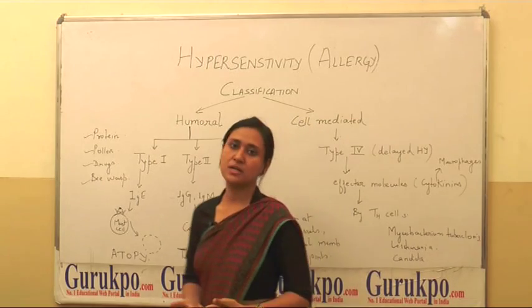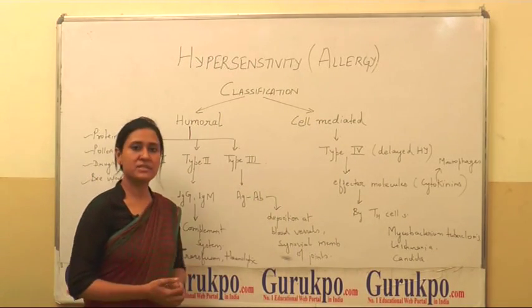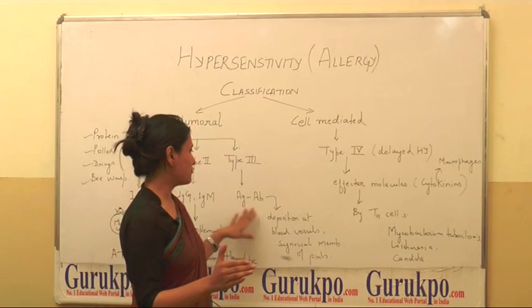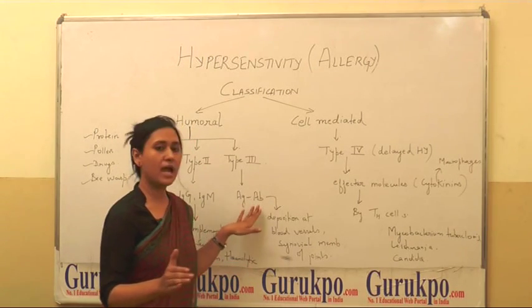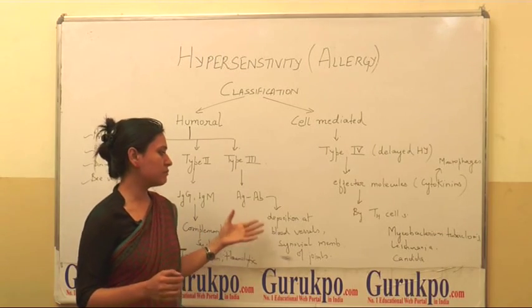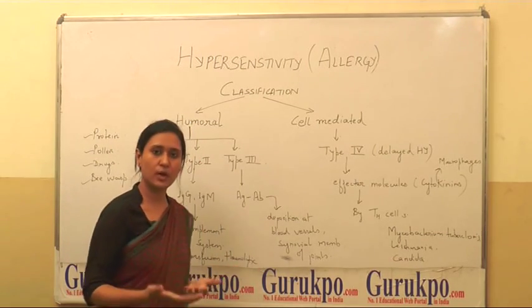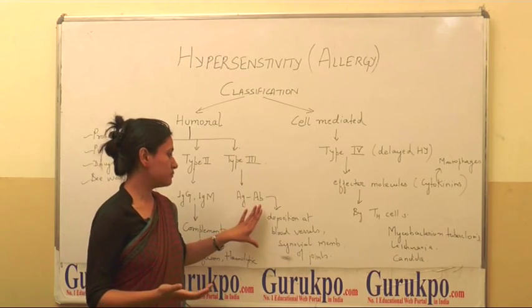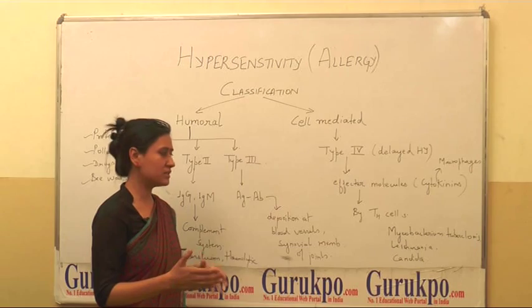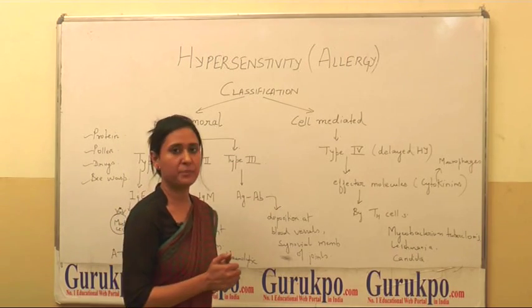The third type is Type 3 hypersensitivity, which occurs because of the deposition of antigen-antibody complexes at certain sites. These sites can be the blood vessels or the synovial membrane of the joints. When these types of complexes are formed and deposit at these sites, they cause Type 3 hypersensitivity.